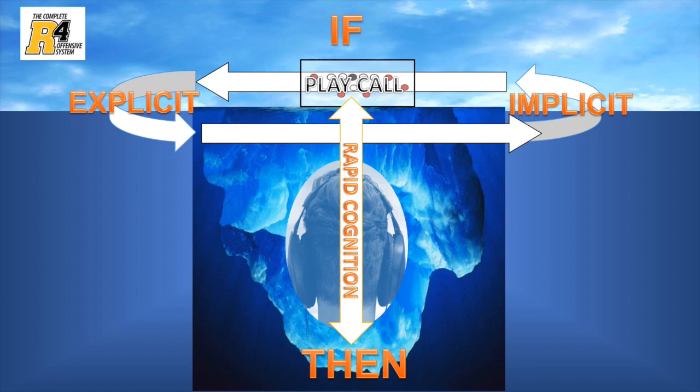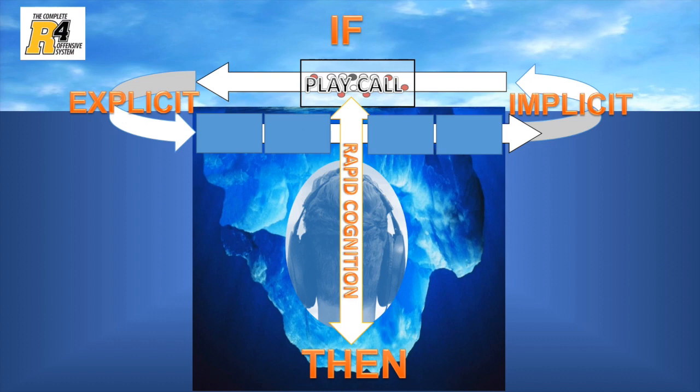A coach's highest need is to understand all of the information and knowledge in the game of football, with the ability to recall, apply, and execute it under pressure in a fast and simple way. He then needs a common language to teach this same process to his staff and players. In order to achieve this ability, we need a bridge that connects and pipelines the explicit information into an implicit action. We call this process the B4 bridge. B4 stands for Box, Bubble, Best, and Build. The bridge provides the decision-making pillars that accelerate our game planning ability.